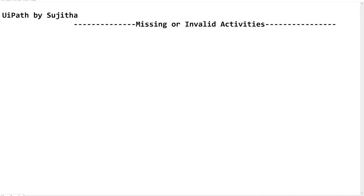Hello techies, welcome back to our channel UiPath by Sujita. In this video we are going to see about missing or invalid activities issue. When we are working on an automation, we may encounter this kind of situation where an activity shows an error message saying missing or invalid activities. So let us know about the reasons for getting this issue and how to fix it.